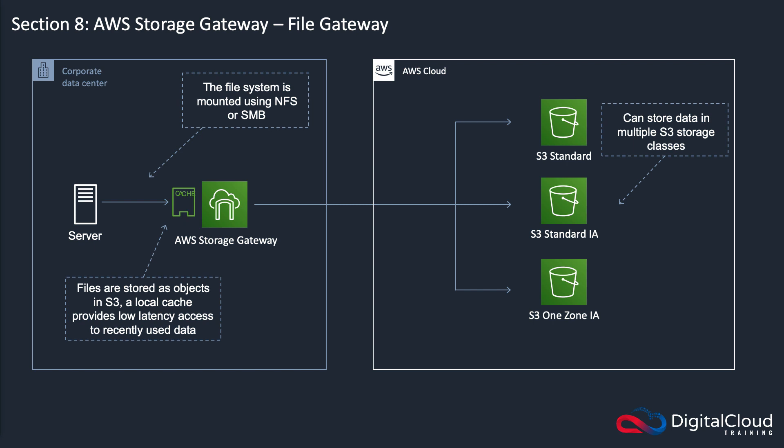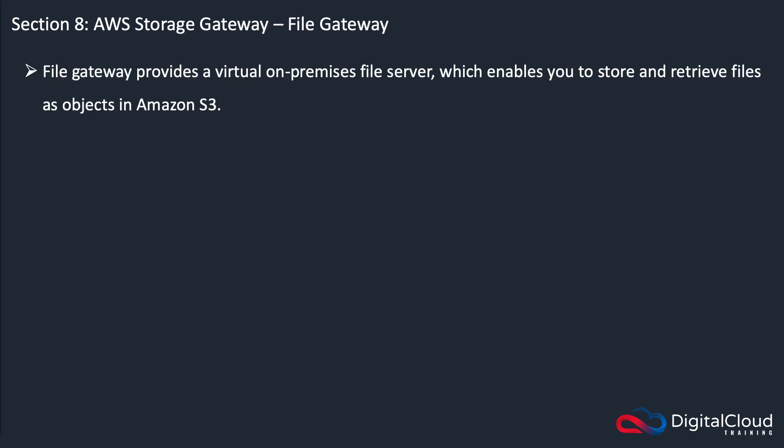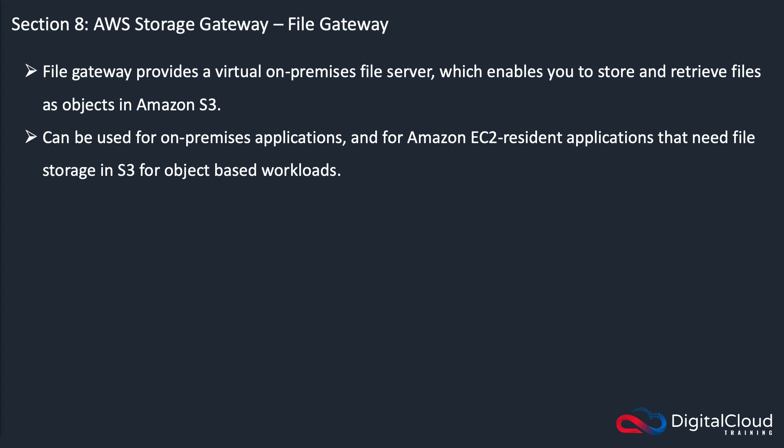Key things to remember: File Gateway is file-level, using SMB or NFS, and the data is stored in S3 but cached locally for recently used data. This is a virtual gateway running on Hyper-V or VMware, and it can also run in EC2. File Gateway provides a virtual on-premises file server enabling you to store and retrieve files as objects in S3. It can be used for on-premises applications and EC2 resident applications that need file storage in S3 for object-based workloads. It's used for flat files only, stored directly on S3.